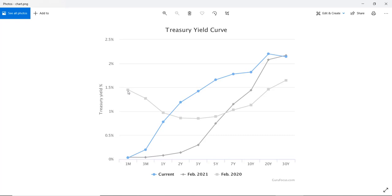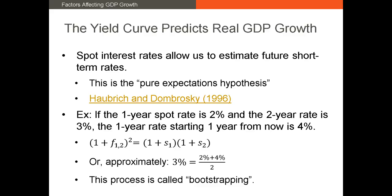An inverted yield curve often signals a recessionary period ahead. Research by Haubrich and Dombrowski (1996) shows that the differences in spot rates between each Treasury security's maturity can predict economic growth. The reason spot rates tend to predict economic growth is because those spot rates — S sub 1, S sub 2 — indicate future short-term rates.